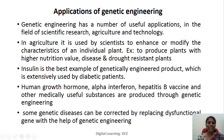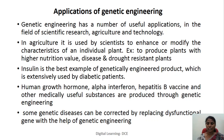Insulin is the best example of a genetic engineering product, extensively used by diabetic patients today. Human growth hormone, alpha interferon, hepatitis B vaccine, and other medically useful substances are also produced through genetic engineering. Some genetic diseases can also be corrected by replacing the dysfunctional gene with the help of genetic engineering.